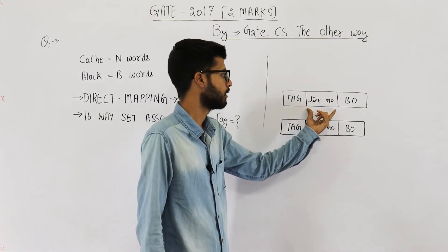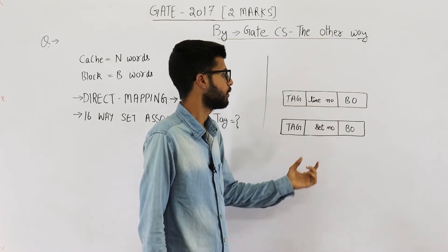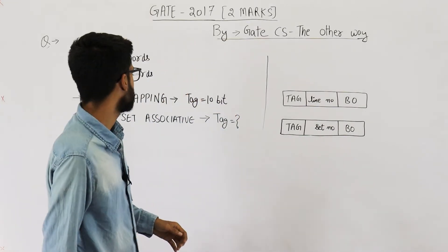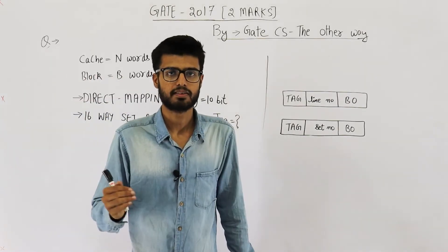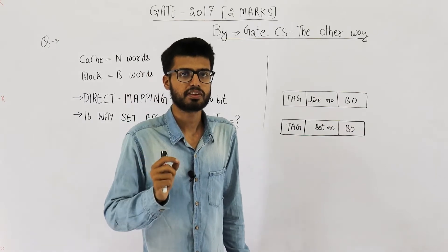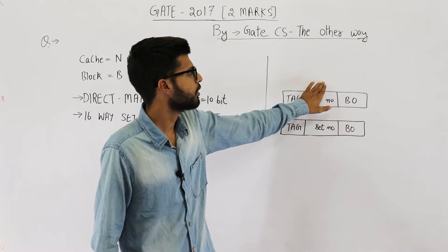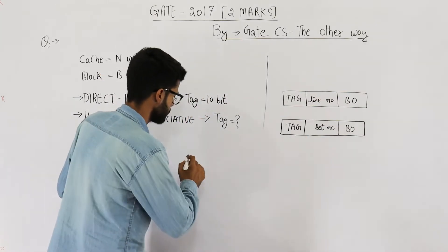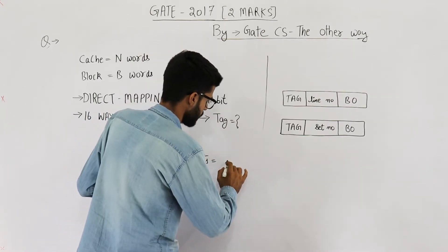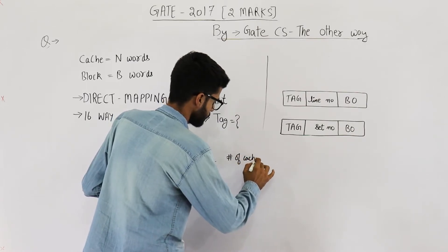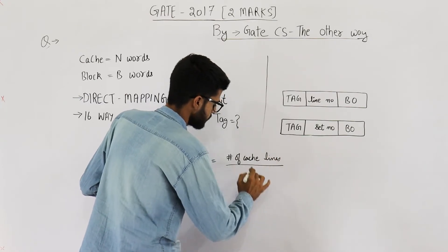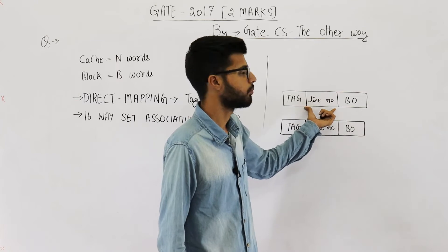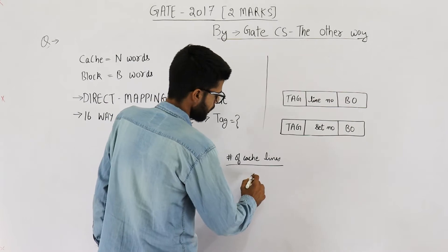We need to find the relation between line number and set number — will the set number take more bits or fewer bits? 16-way means 16 cache lines are combined to form one set. So the number of sets equals number of lines divided by 16, which is the same as dividing by 2 raised to the power 4.